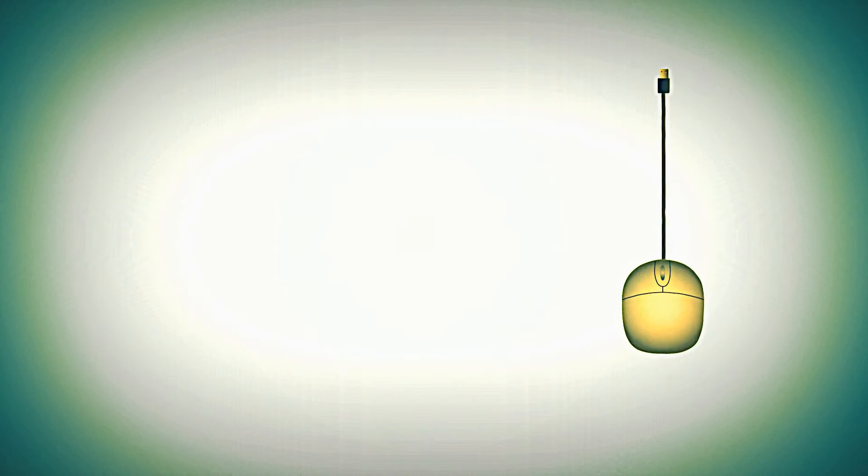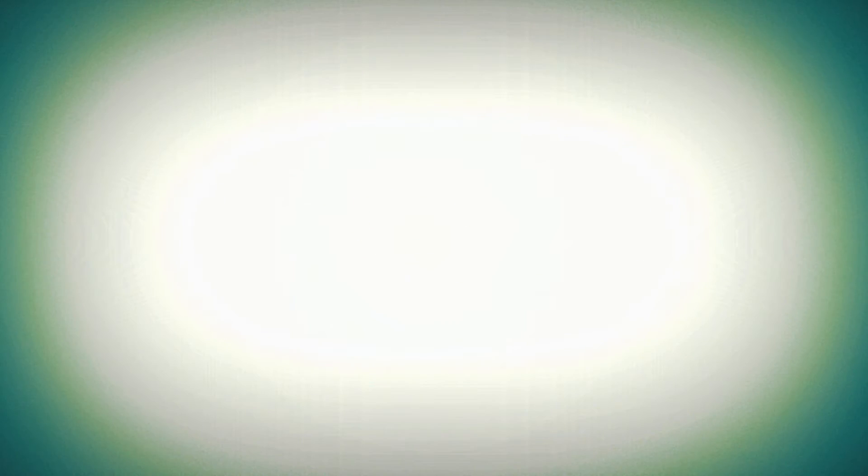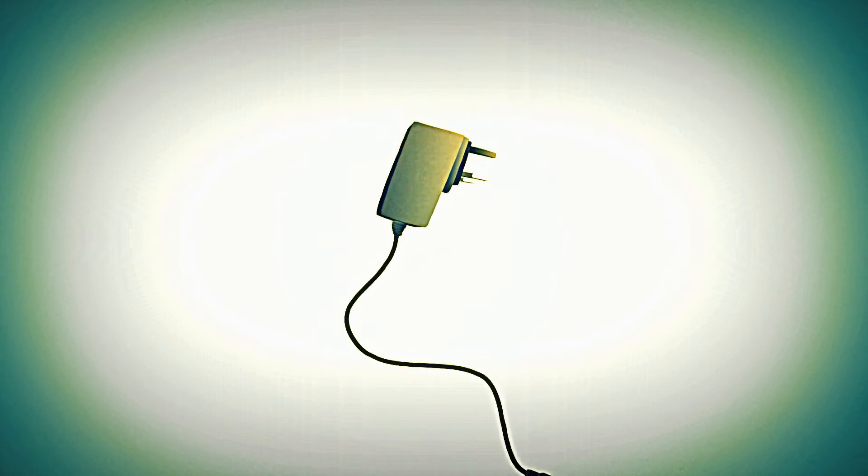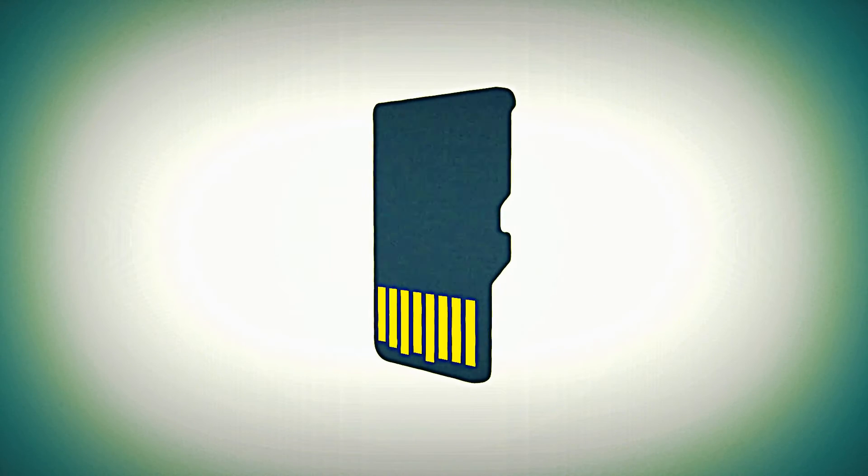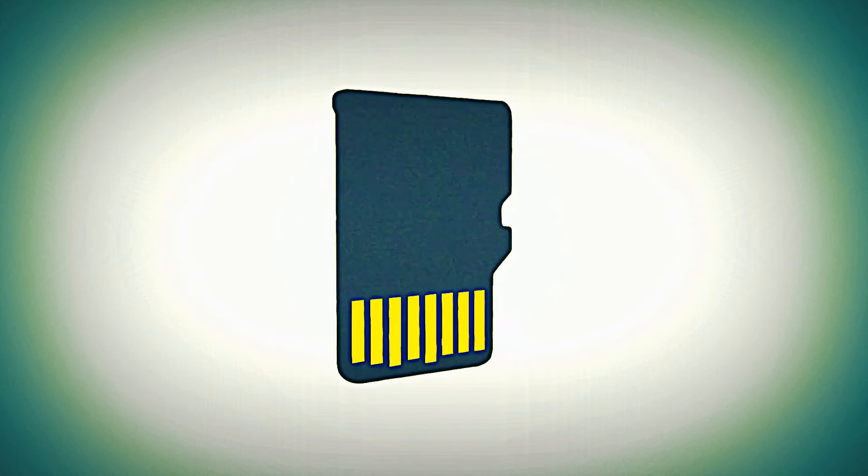A USB mouse and keyboard, a micro USB power supply like one you'd use to charge your mobile phone, and an Ethernet cable to get online. The operating system runs from a micro SD card, just like the one in your digital camera.